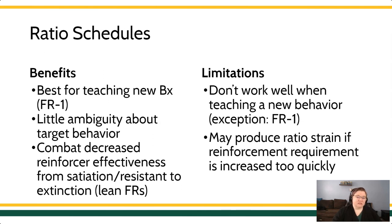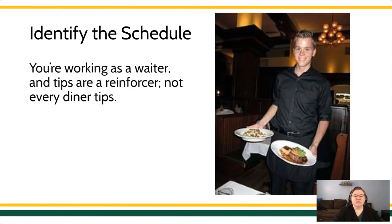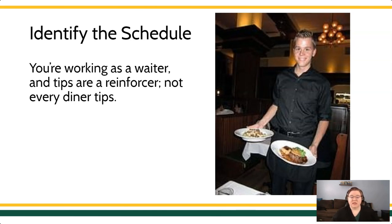Let's see if we can identify some of these schedules. Tell me whether this scenario is a fixed or variable ratio schedule: you're a server, tips are your reinforcer, and not every diner tips. This is probably a variable ratio schedule because not every diner tips. If every diner tipped, you'd be earning the reinforcer every time — that's a fixed ratio one schedule. But here, you cannot predict which diner is not going to tip.